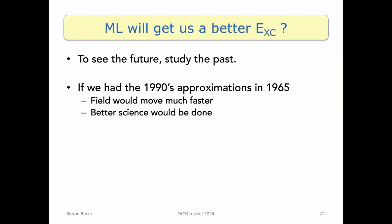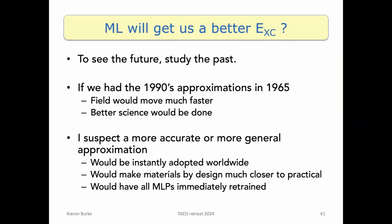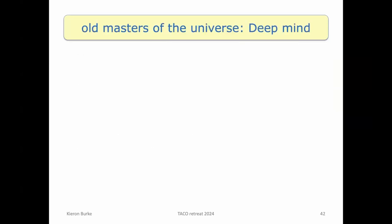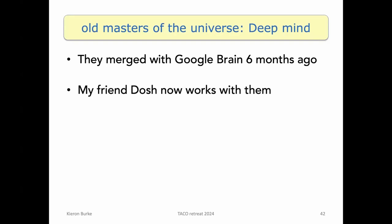Yeah, so will machine learning get us a better exchange-correlation? And a way to think about this, you can just go back into the past and ask what would have happened if they'd had the formulas that we got in the 90s. And you can very clearly see that it would have accelerated a lot of science. So I think yes, machine learning will get us a better exchange-correlation energy. So what happened to those DeepMind guys? They did their DM21, it was a bit of a flub. They got merged with Google Brain about six months ago.